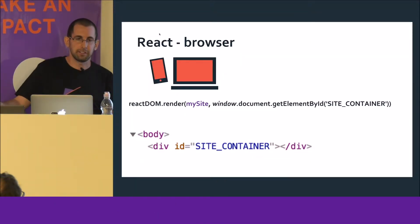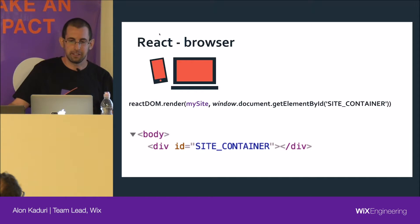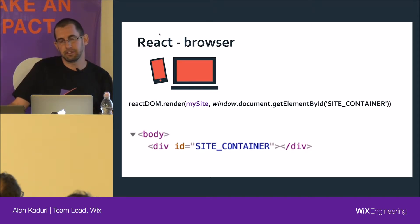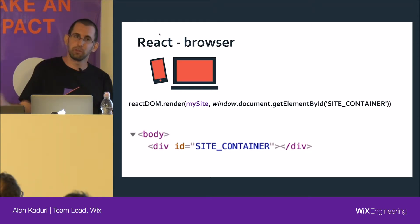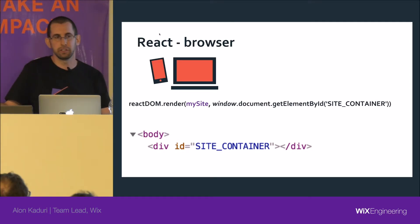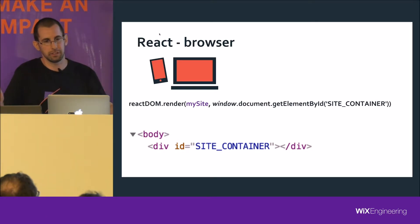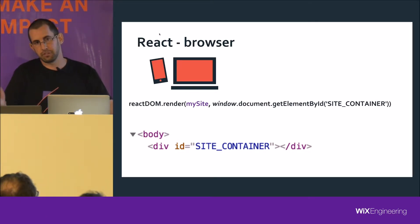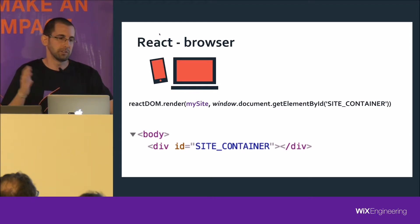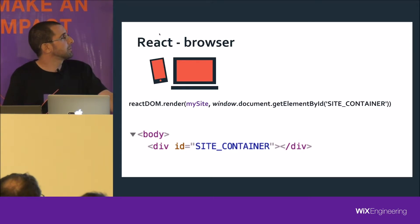We use React in Wix, and React lets us run the same code both in the server and in the client. It's called isomorphic code or universal code — basically JavaScript code that runs both in Node and in the browser.